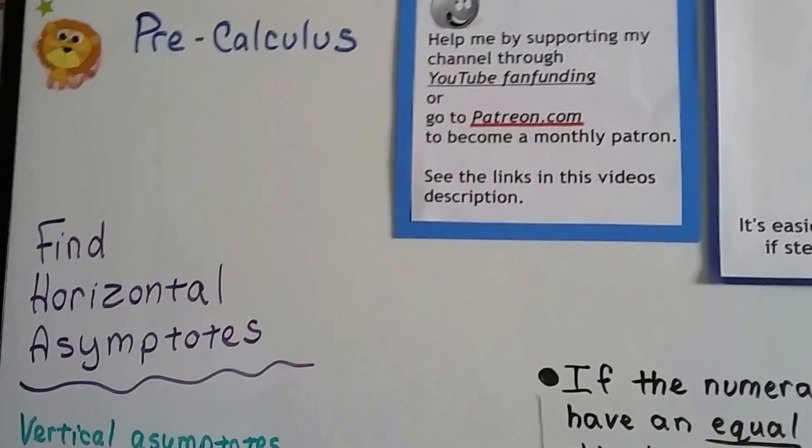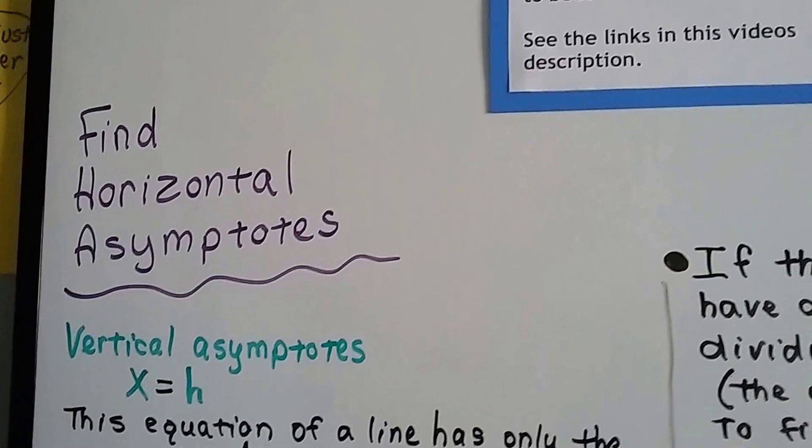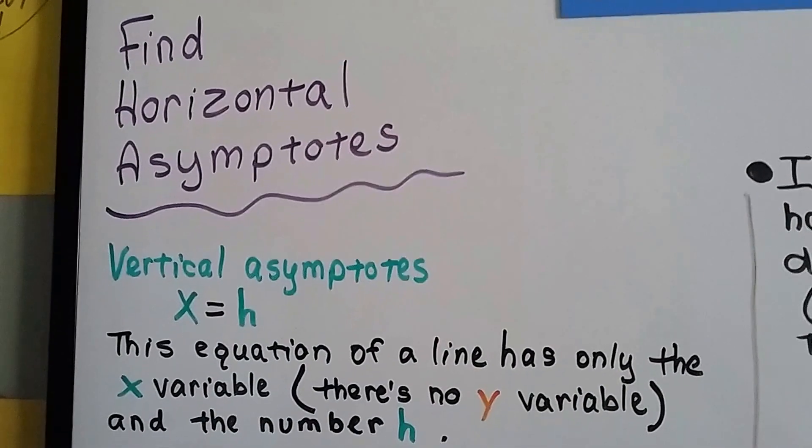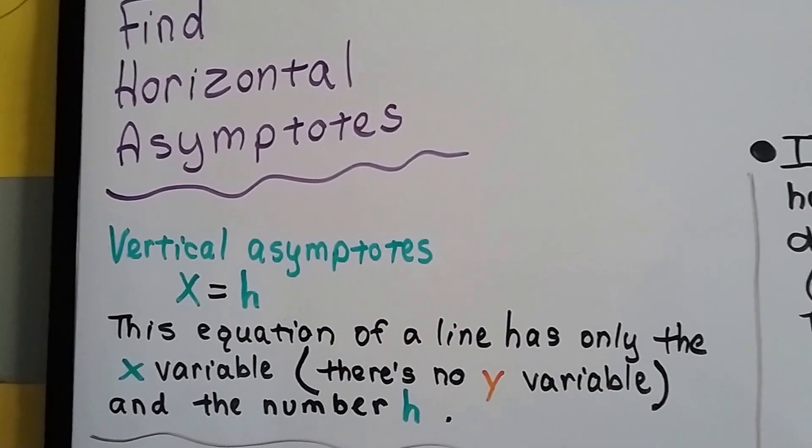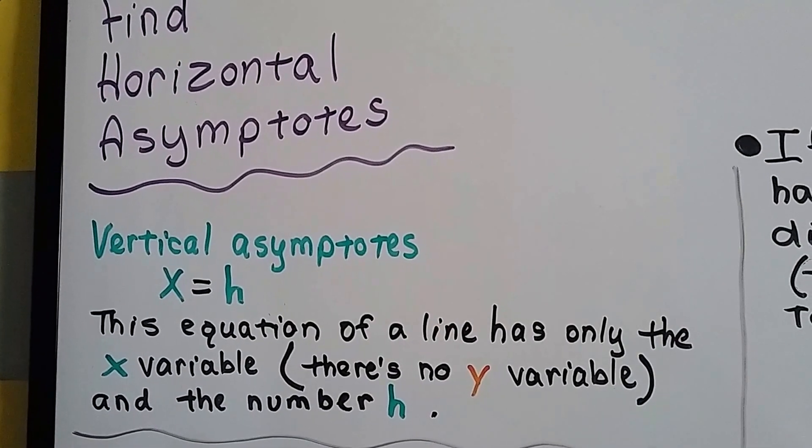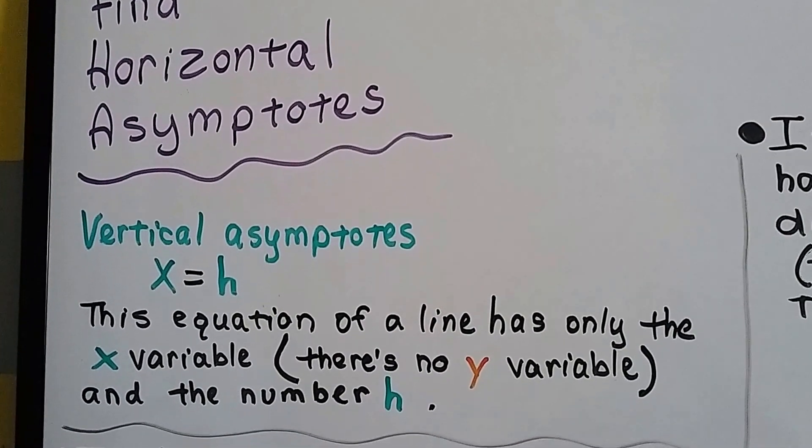We're going to find horizontal asymptotes. In the previous video, we saw vertical asymptotes have x equals h, and that equation of a line has only the x variable and the number h. There's no y variable.